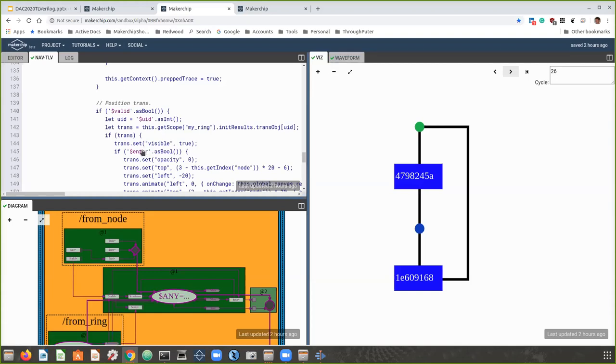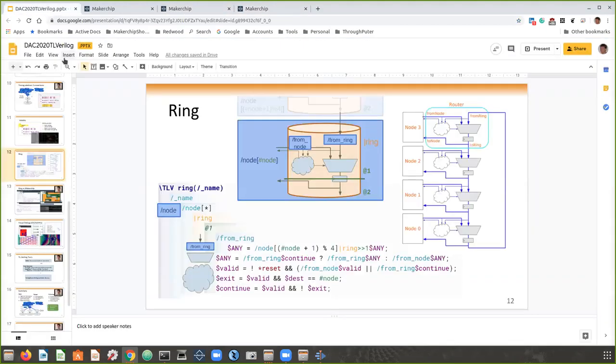Over here, in the code view, this is some of the visualization code, which I won't explain it in detail given the time. But you'll notice here that the visualization code is referencing signals in their native TL Verilog style, and that these references are also linked with the diagram to help you develop the visualization. So jumping back to the presentation.